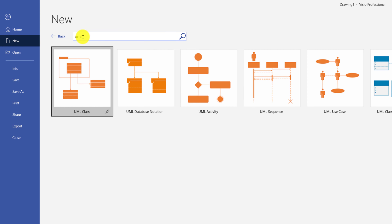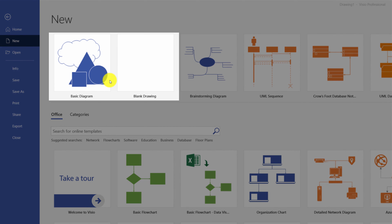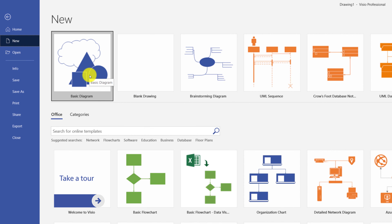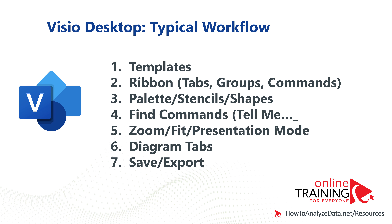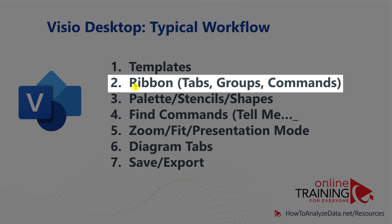If something you need is available in the list, you can select it. If you're unsure which template you need, you can start with the basic diagram or blank drawing. I'm going to click on the basic diagram to start my Visio diagram. In a typical Microsoft Visio workflow, you start by selecting the template, then use the ribbon interface with its tabs, groups, and commands.